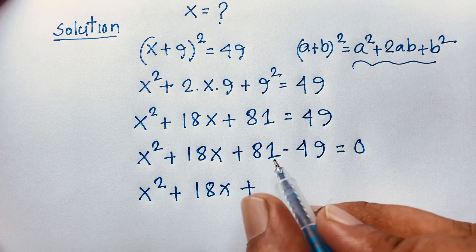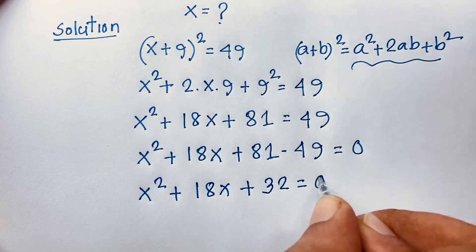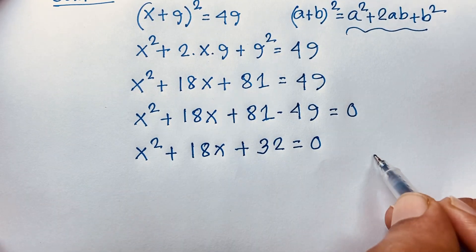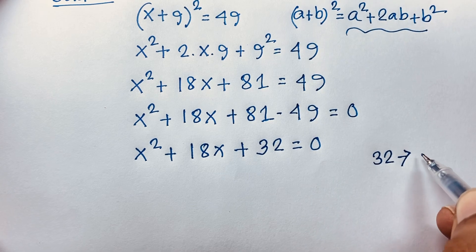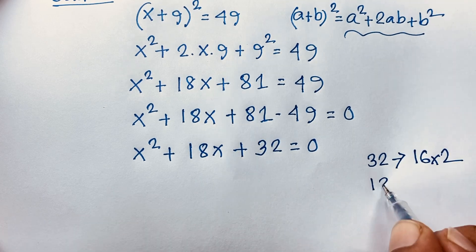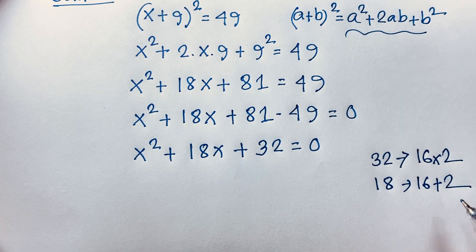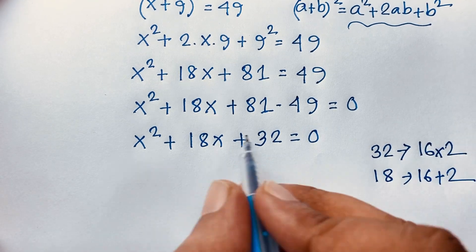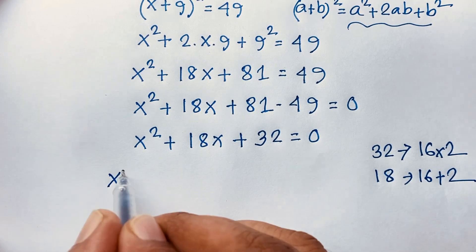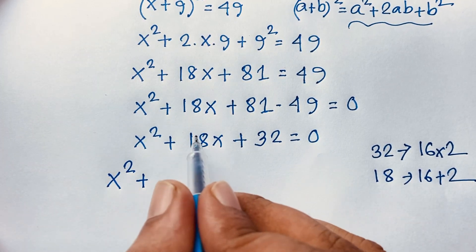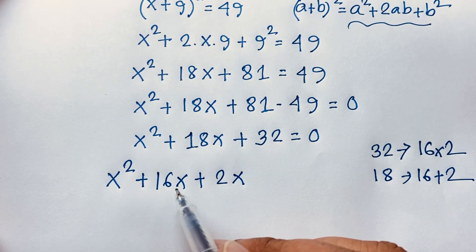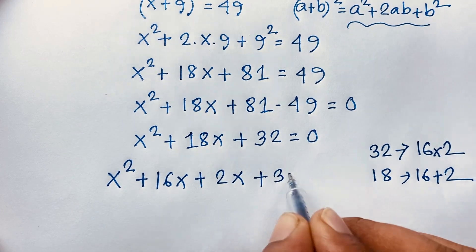So x squared plus 18x plus 81 minus 49 — that gives 32 — is equal to zero. Now for factoring: 1 times 32 is 32. The product of 16 times 2 is 32, and the sum of 16 plus 2 is 18. So using middle-term factoring on this quadratic equation: x squared plus 16x plus 2x plus 32 equals zero.